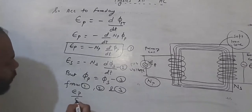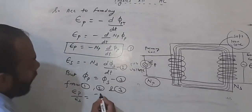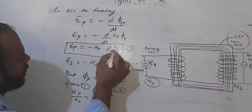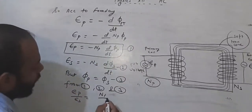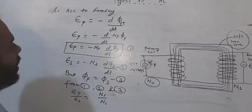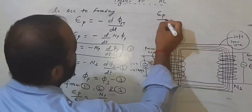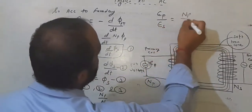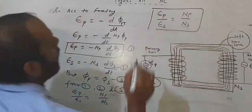EP upon ES equals NP upon NS. The minus signs cancel out, giving us the transformer formula: EP upon ES is equal to NP upon NS. This means that if the number of turns is more, the induced EMF — voltage — is more; if the number of turns is less, the EMF is less.